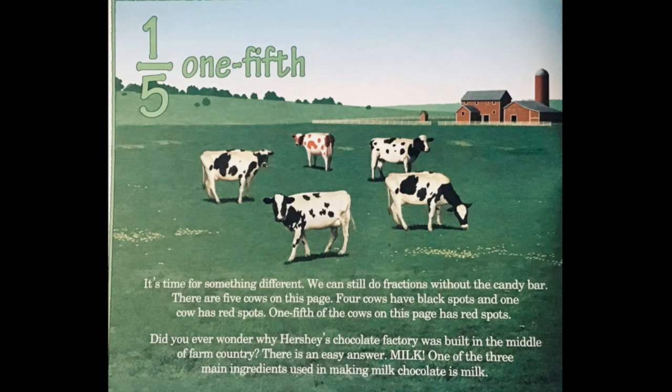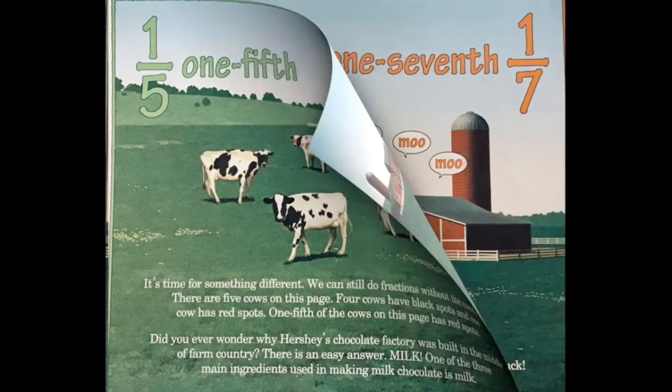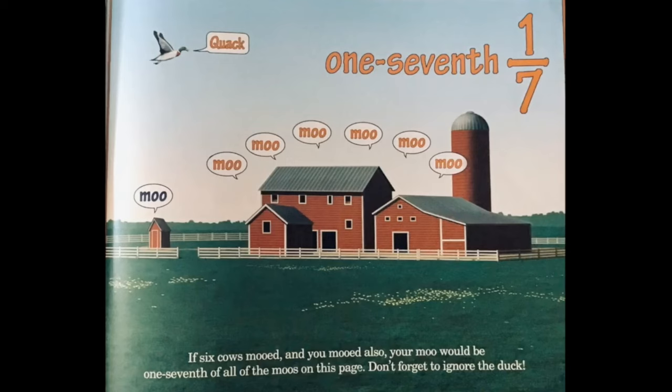We can still do fractions without the candy bar. There are five cows on this page. Four cows have black spots, and one cow has red spots, so one fifth of the cows on this page has red spots. Did you ever wonder why Hershey's chocolate factory was built in the middle of farm country? That's an easy answer — milk! If six cows mooed and you mooed also, your moo would be one seventh of all the moos on this page. Don't forget to ignore the duck.